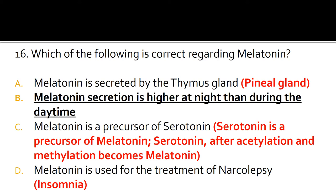A is false because melatonin is secreted by the pineal gland. C is false because it is the other way around — serotonin is a precursor of melatonin. Serotonin, after undergoing acetylation and methylation, gets converted to melatonin. D is false because melatonin is used for the treatment of insomnia.